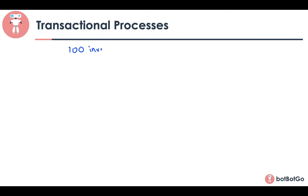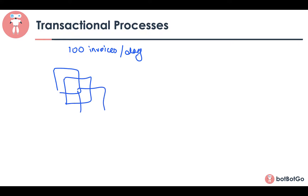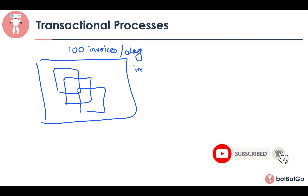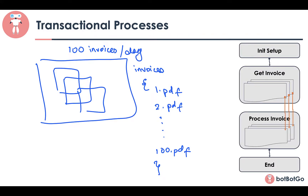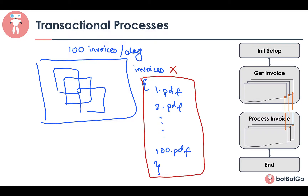In the Transactional Process, we take the same case where you have 100 invoices that need to be processed per day, all stored in a folder called Invoices. But in this case, unlike the previous case, instead of passing the entire folder as an input, you will be passing a list of all the invoices. So the workflow again has an initial setup stage, but in the Get Invoice state, instead of passing the folder path, you pass a list of paths of all the invoices.